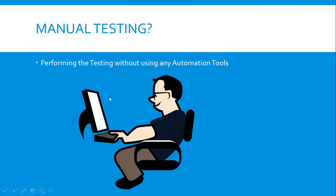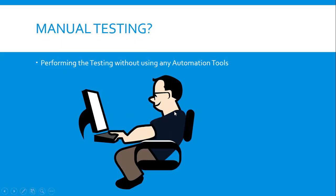For example, this person is verifying the login functionality of the Facebook application. In that case, this person will manually sit before the computer using his eyes and hands. He will open the Facebook application, browse it manually in any browser, navigate to the login page, then enter the username and password, and manually click on the login button. He will visually check whether the application is getting logged in or not after providing valid credentials.